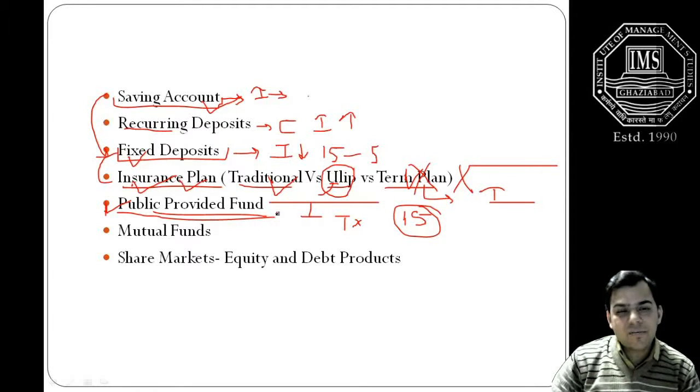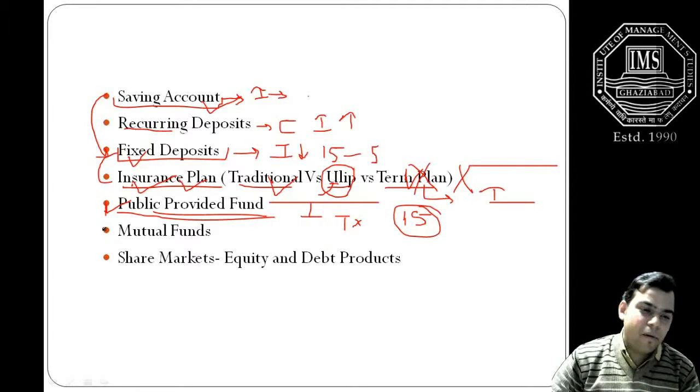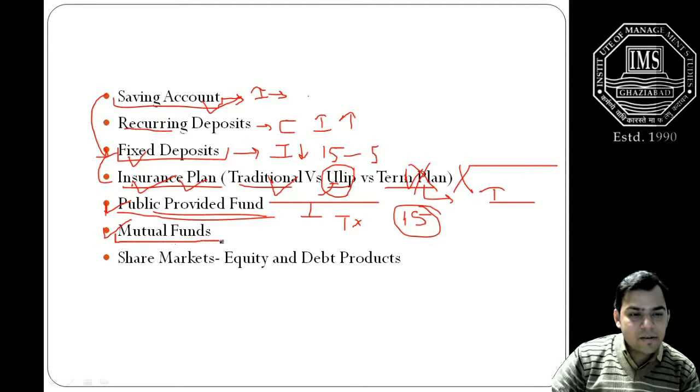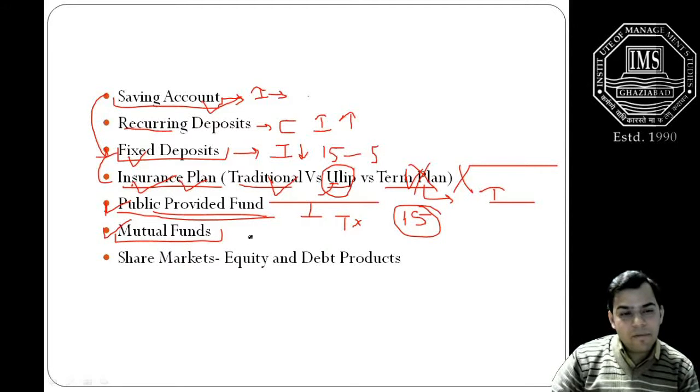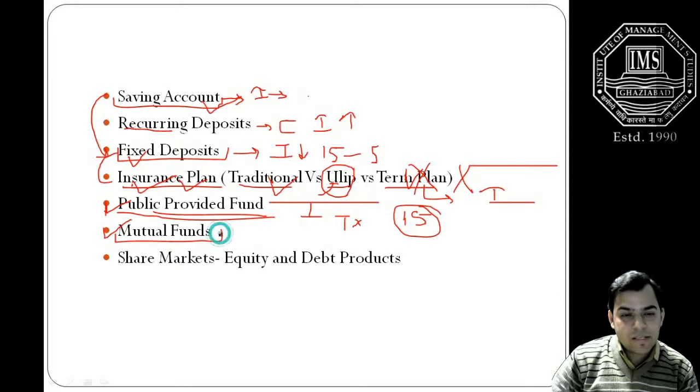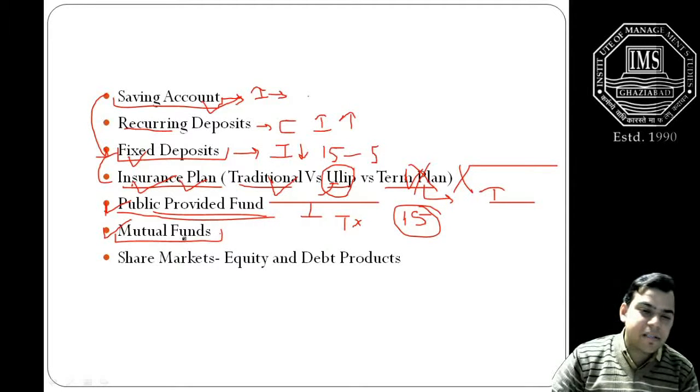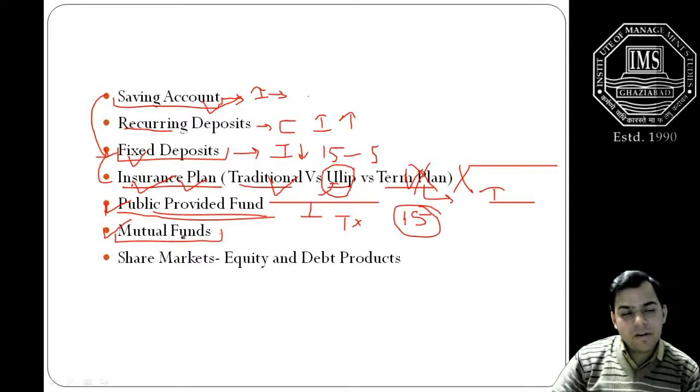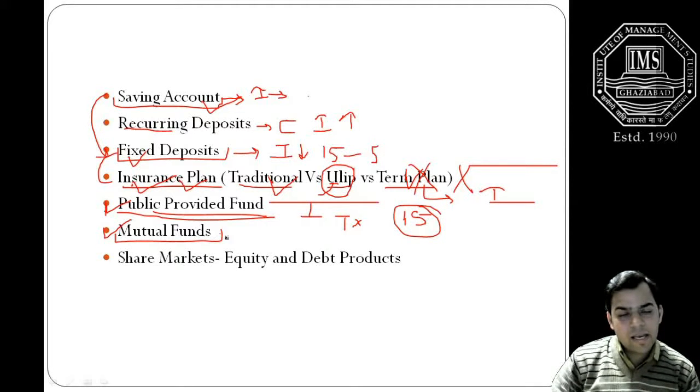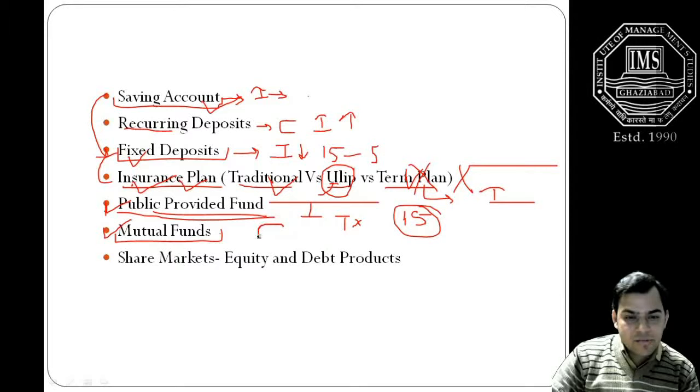And since a lot of small savers are being involved in PPF, the rate of interest does not change so much frequently. Another important component which is slowly getting popularity these days and is good for the small investor is the mutual funds. There can be various categories of mutual funds - some options are very aggressive, some are defensive. Depending upon the scheme, the investor should invest in a mutual fund.